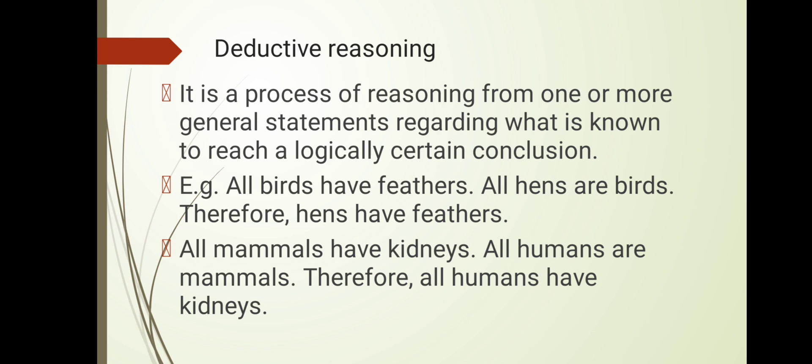In deductive reasoning, we always go from a general statement to a specific case. For example: all birds have feathers; all hens are birds; therefore, hens have feathers. So hens, being birds, also have feathers.